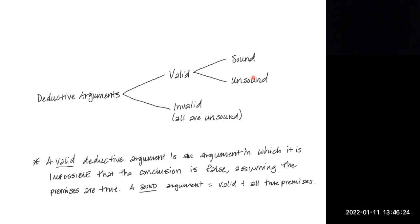So what is a valid deductive argument? A valid deductive argument follows our original definition of deductive arguments — it's an argument in which it is impossible that the conclusion is false if we assume the premises are true.